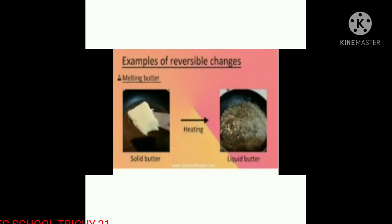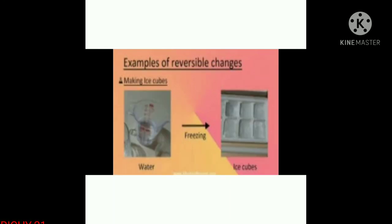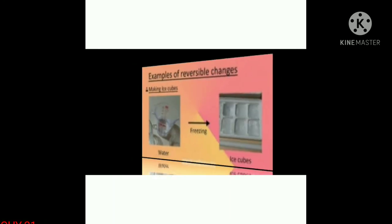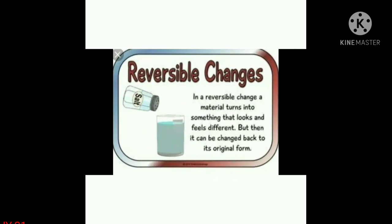Solid butter, when heated, becomes liquid butter. Once again, when frozen, it returns to the original solid substance. In a reversible change, material turns into something that looks and feels different, but then it can be changed back to its original form.